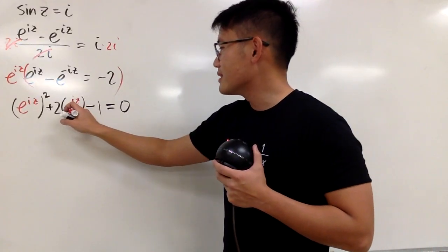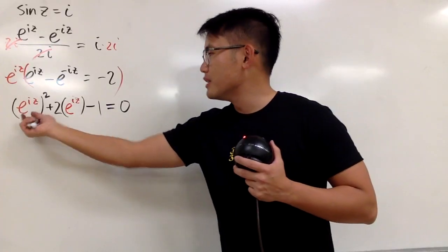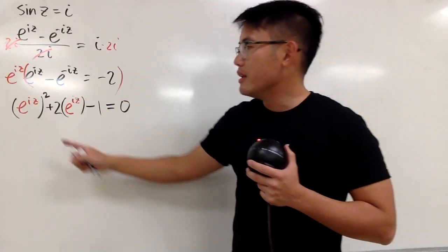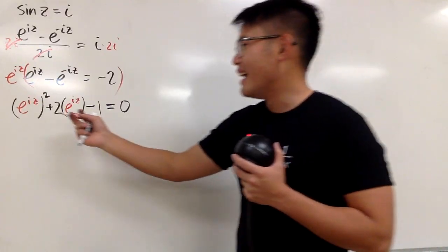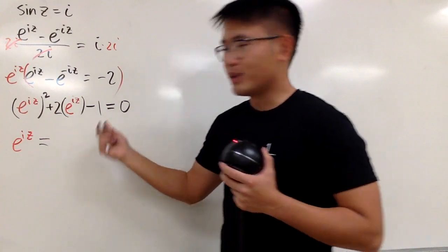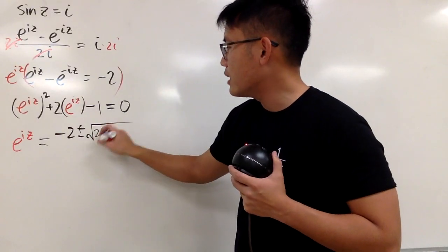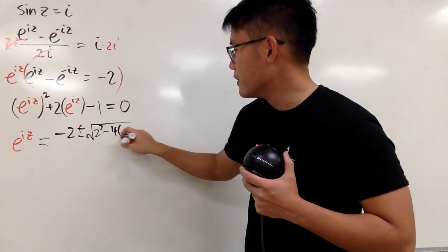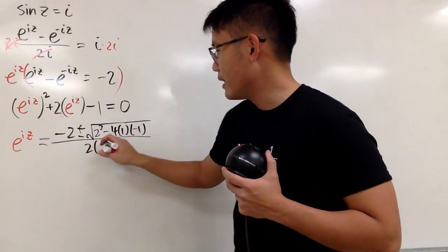Why do you want to do that? Because now notice, this right here is actually a quadratic equation, because of this to a second power, this to a first power, and then no variable right here. It's a quadratic equation in terms of e to the iz. So we can utilize the quadratic formula, and that will give us e to the iz, like this. Equals, of course, we can just do a negative b, which is negative 2, plus minus square root of b squared, which is 2 squared, minus 4 ac, which is 1 and negative 1, so I'll put on minus 4 times 1 times negative 1, all over 2 times 1, like that.